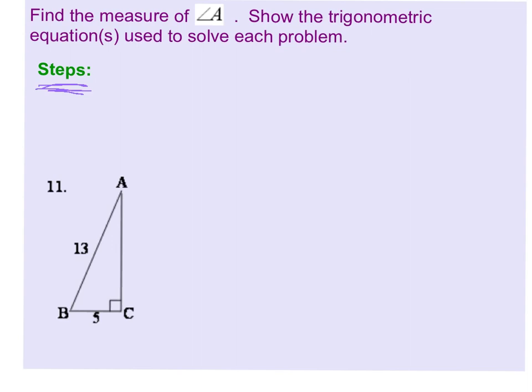So the first thing that you want to do is write the trig ratio using SOHCAHTOA. If you look at number 11, we're trying to find angle A, which is this angle here.